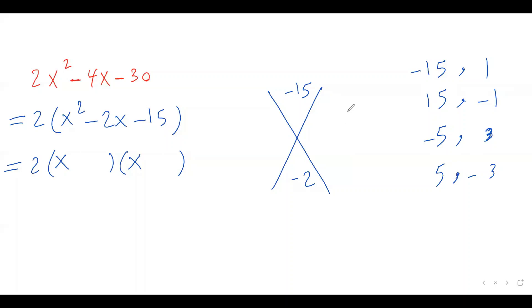But which one of these two numbers work here? We have to look at our b value. So, I'm looking for two numbers which their product is negative 15, sum is negative 2. Because the sum is a negative number, I know my bigger number should be negative. So, it should be this case or this case.